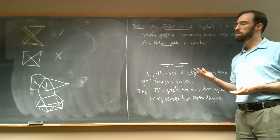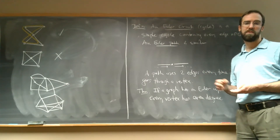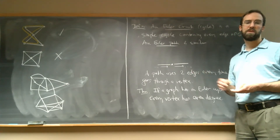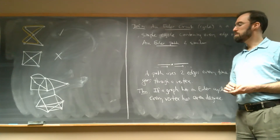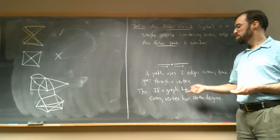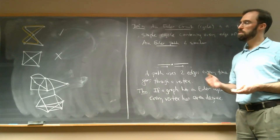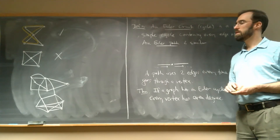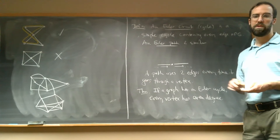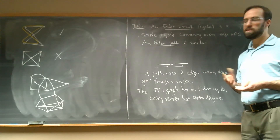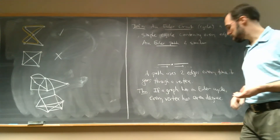Hierholzer had written a paper, and it wasn't published before he died. One of his friends was able to have the paper published after his death. He proved the other direction of this theorem — that if everything has even degree, then there's going to be an Euler cycle — and he proved it by actually showing how to find one.